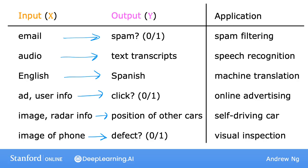In all of these applications, you would first train your model with examples of inputs x and the right answers, that is, the labels y. After the model has learned from these input-output, or x and y pairs, it can then take a brand new input x — something it's never seen before — and try to produce the appropriate corresponding output y.